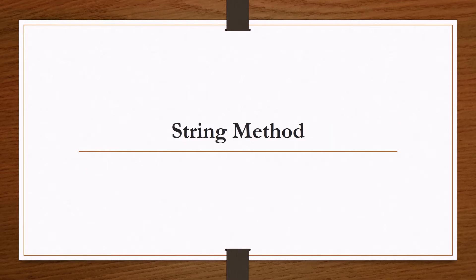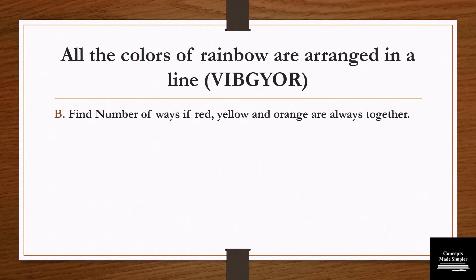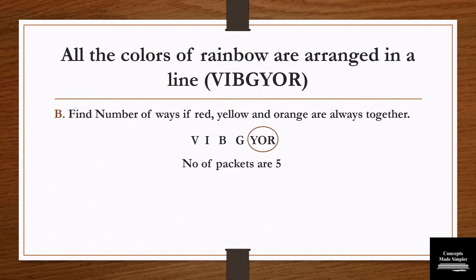Let's learn what exactly the string method is with an example. Find the number of ways if red, yellow, and orange are always together. Since the question says always together, we go with the string method. We write all the colors of the rainbow keeping yellow, orange, and red together. Since these three have to be together, we tie them with a string. Now we have 5 individual packets.